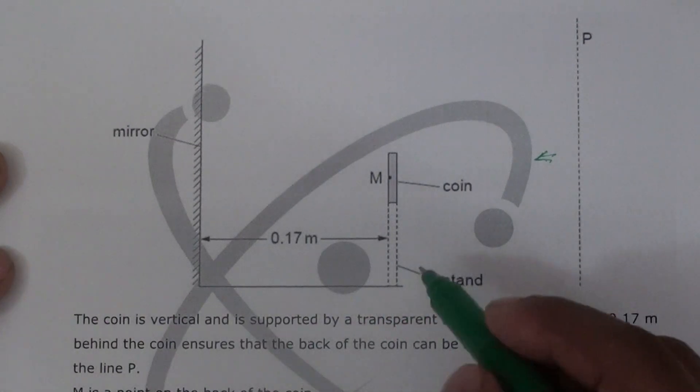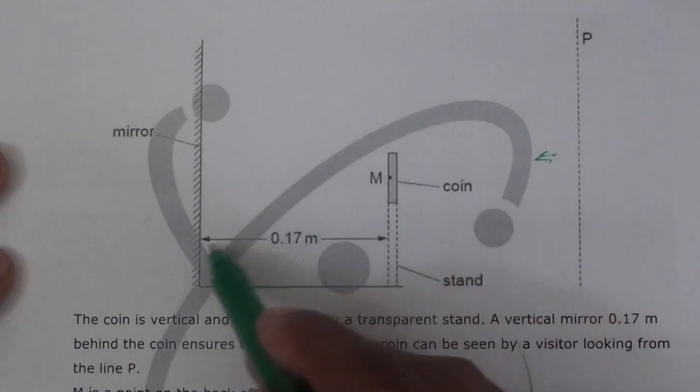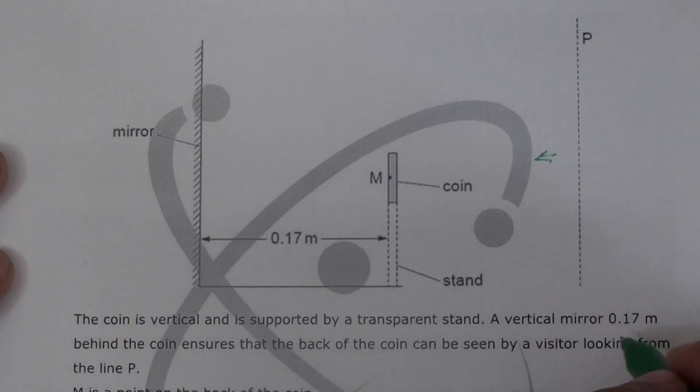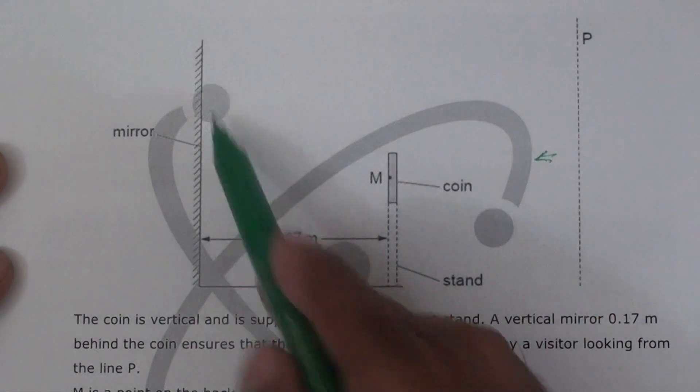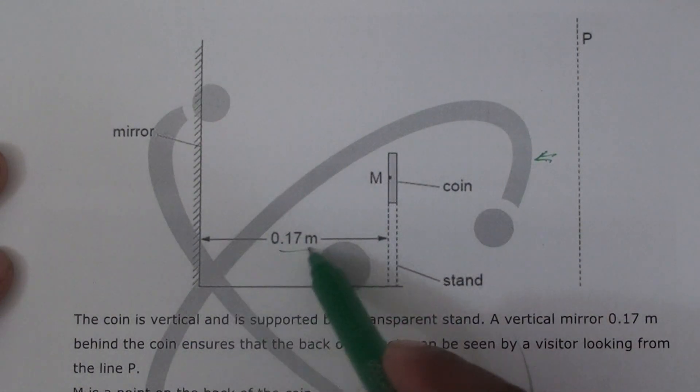The coin is vertical and supported by a transparent stand. A transparent stand means you can see through it from here. A vertical mirror is 0.17 meters behind the coin. This is a vertical mirror which is 0.17 meters away.